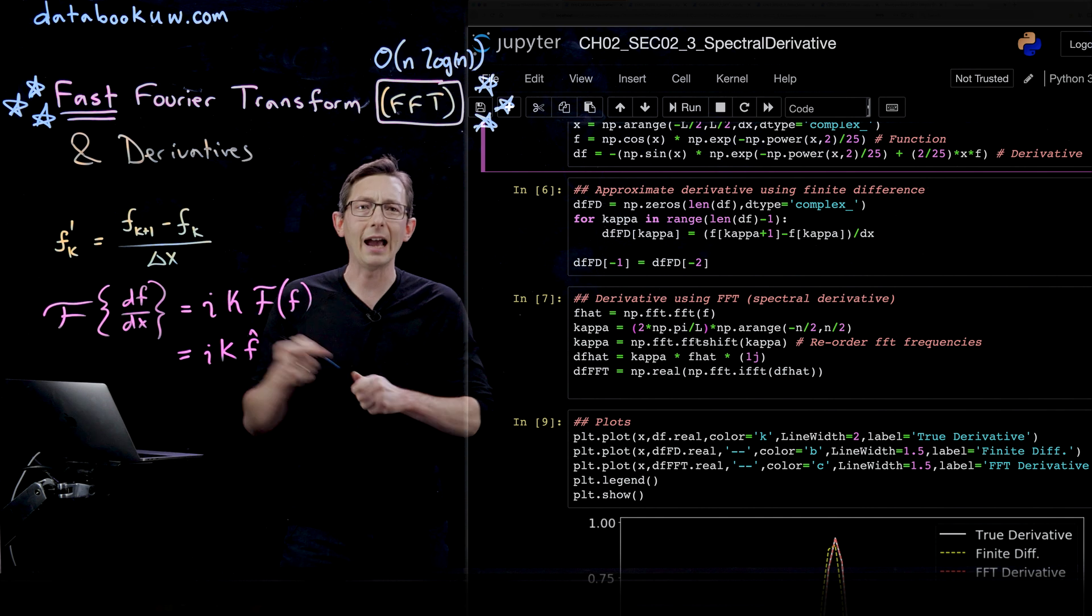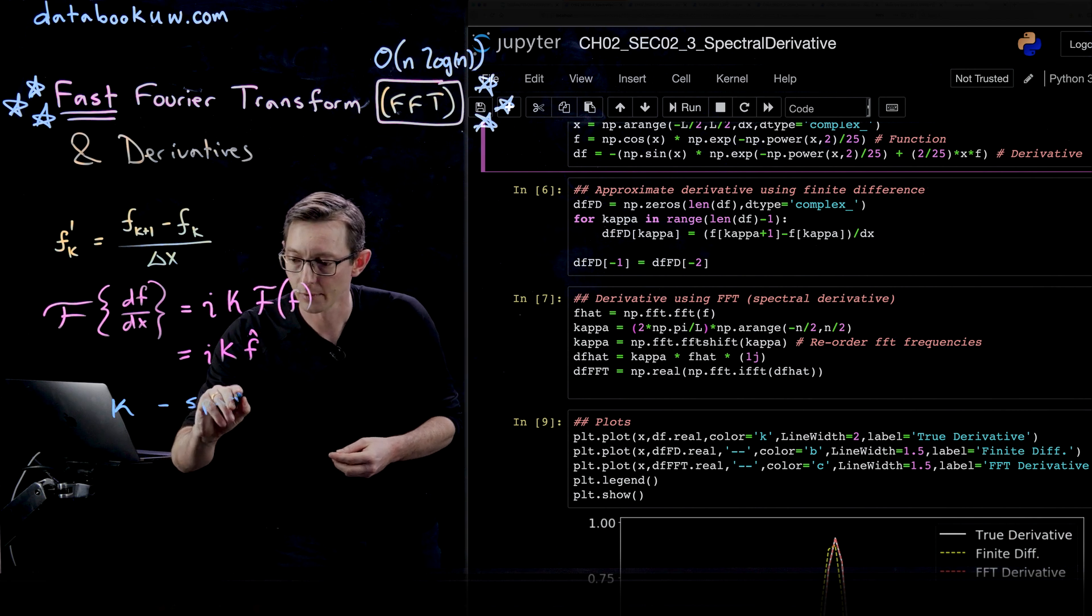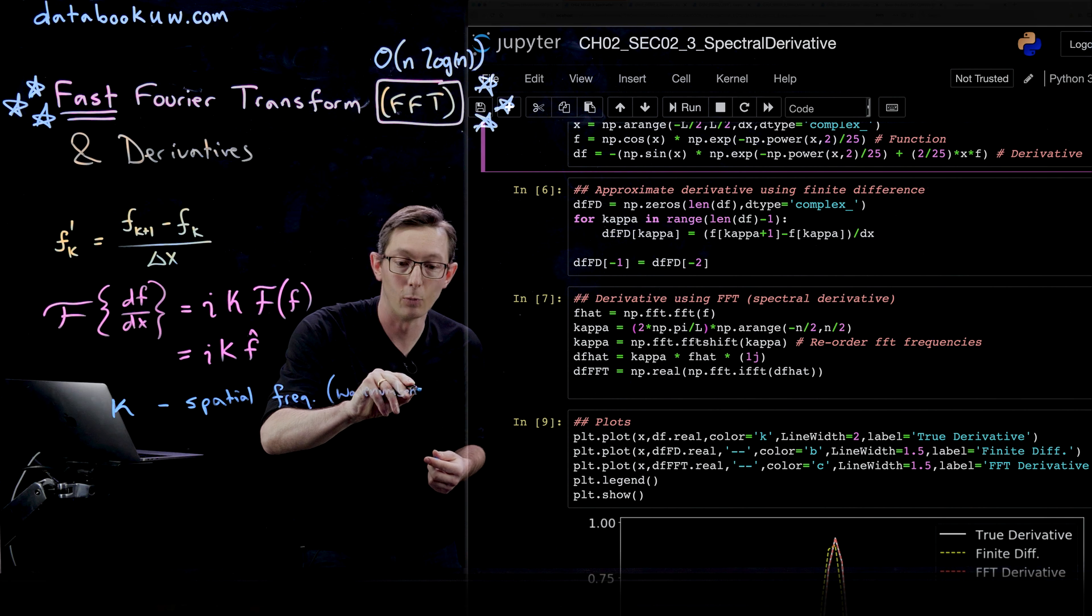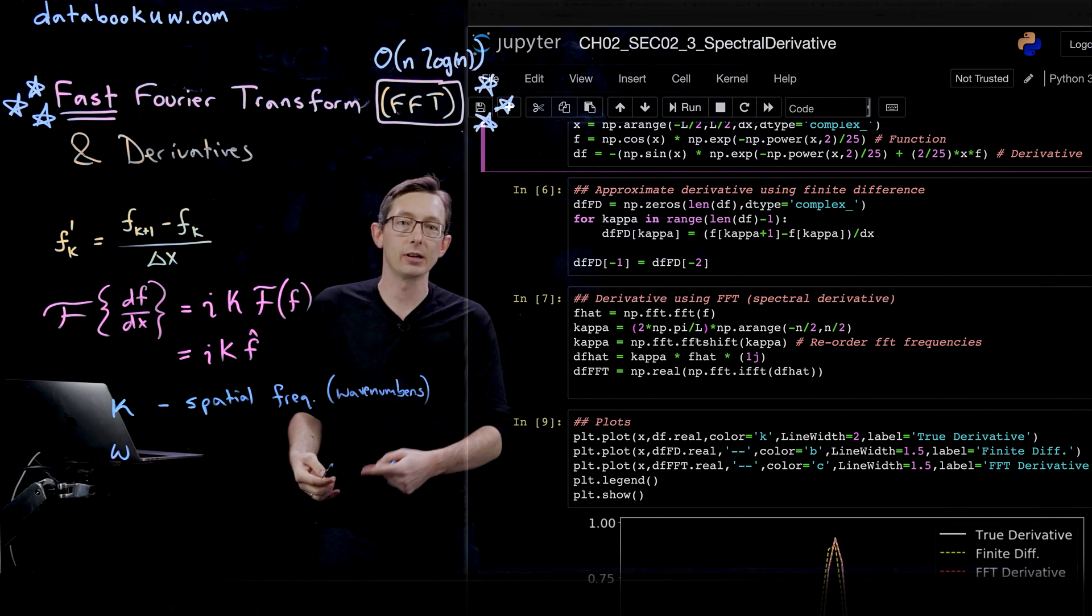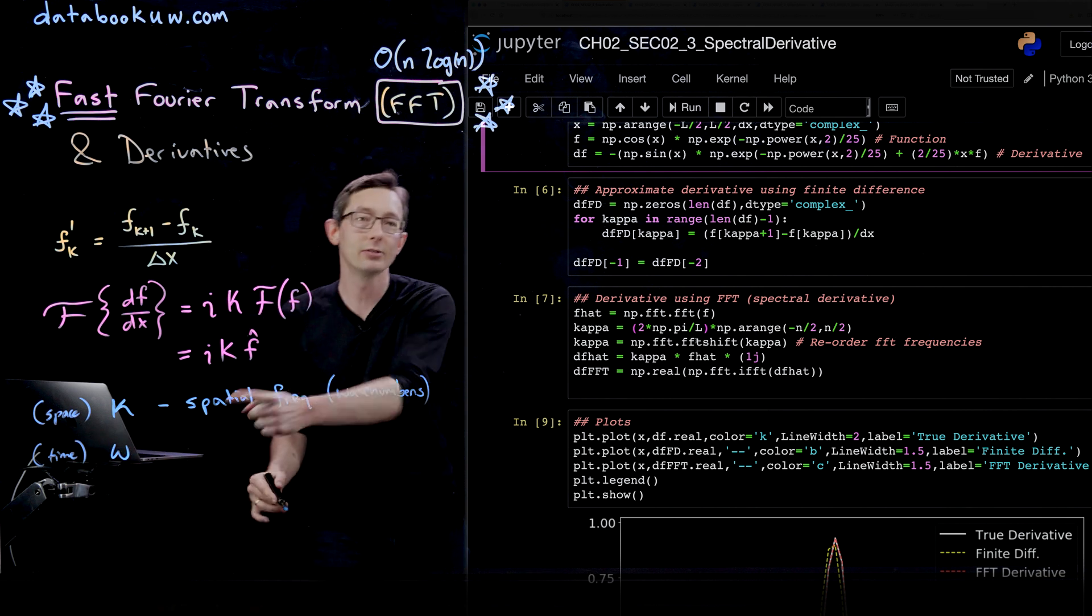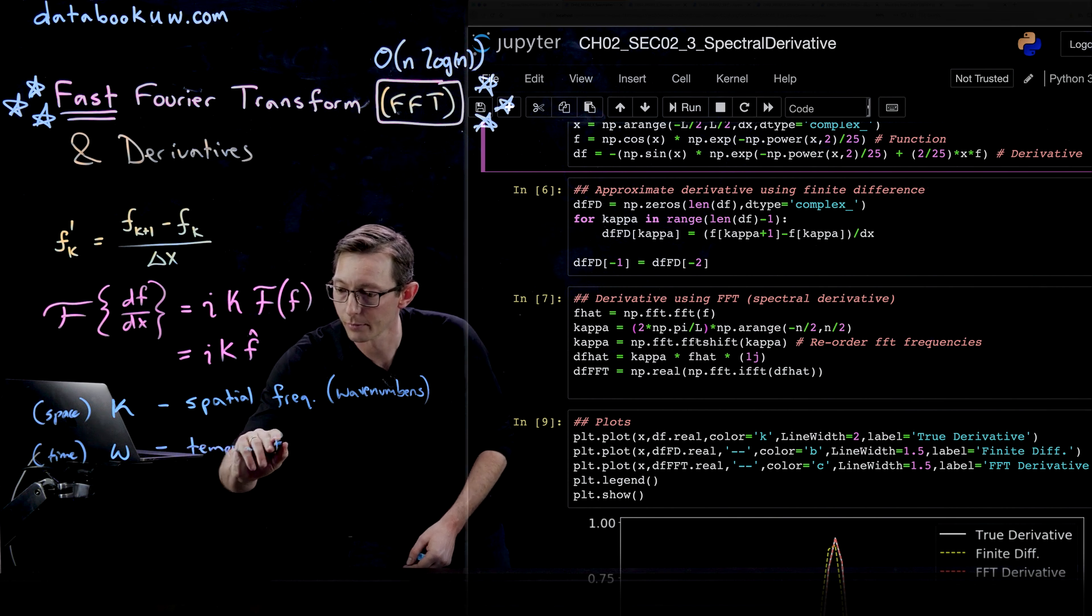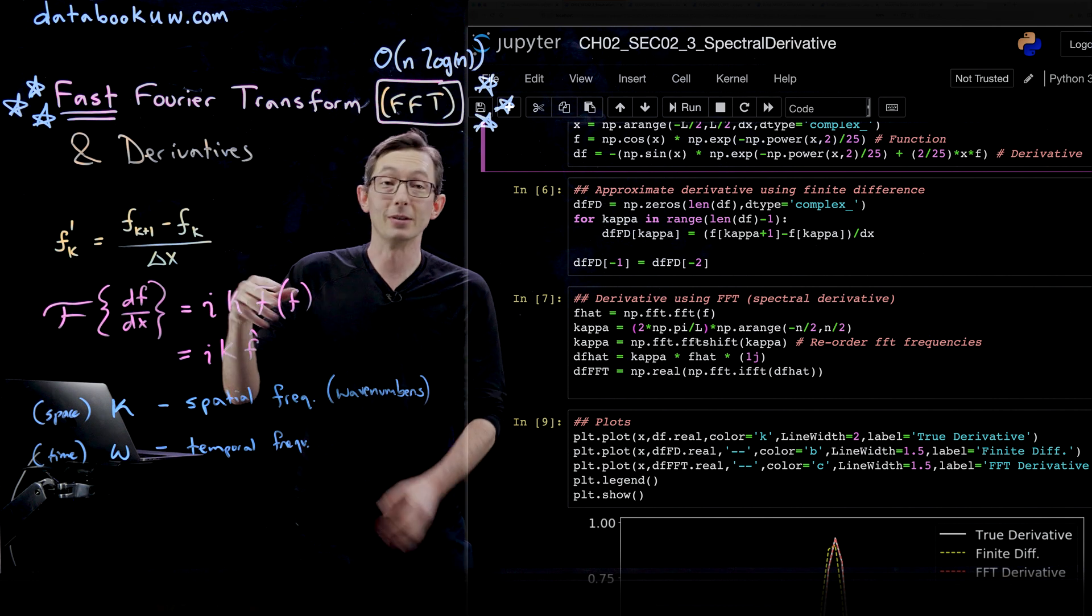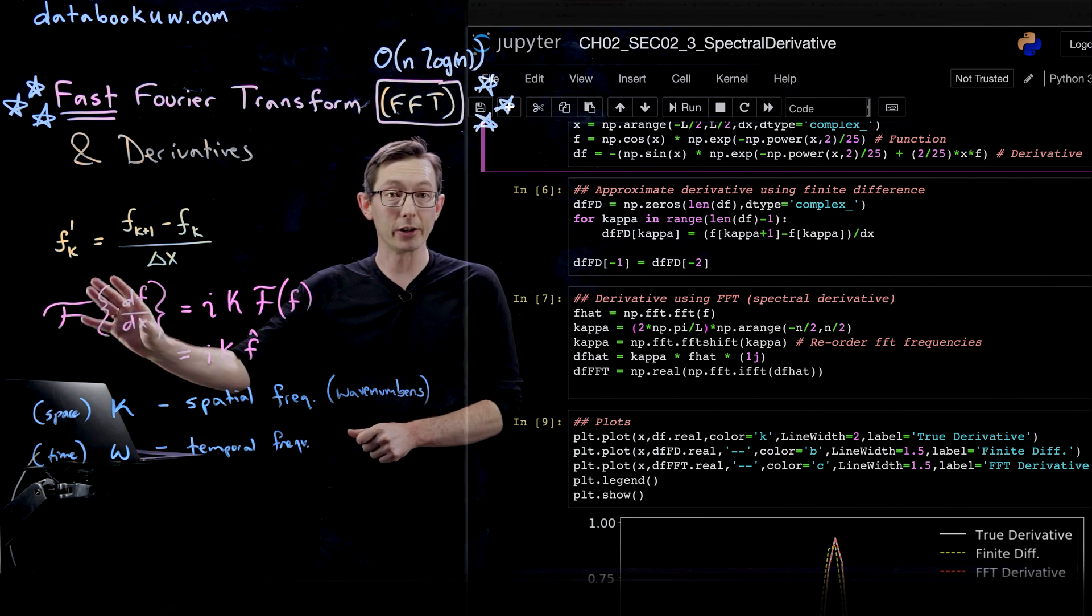I'm going to make a note here. I use kappa when I'm Fourier transforming in space. These are spatial frequencies, sometimes called wave numbers. Kappa is a vector of spatial frequencies. I usually use omega when I'm Fourier transforming in time. Omega would be temporal frequencies. We used omega before when we did df dt. But basically they play the same role. It's just what I call them if I Fourier transform in space, I call those frequencies kappa instead of omega.